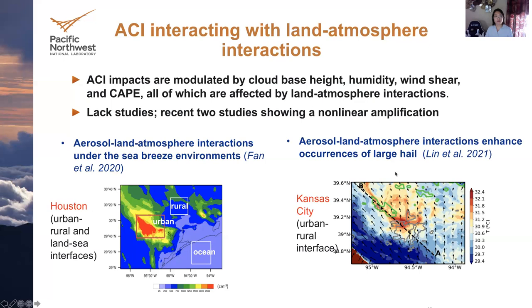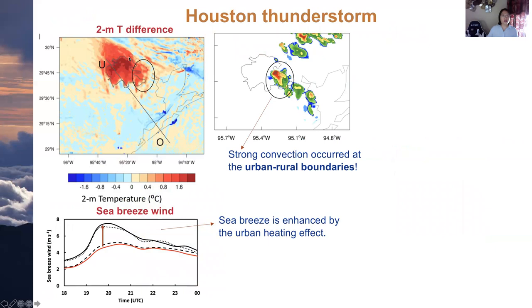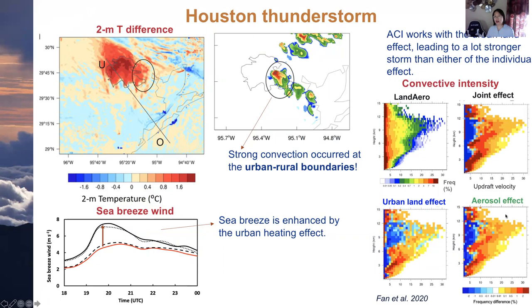Over Houston, you can see there is large heating due to the urban heat island effect, which caused the sea breeze to be significantly enhanced. However, the strongest convection occurred at the urban-rural boundaries, where we have the largest contrast in moisture, temperature, and aerosols — not at the location of greatest heating. This stronger convection results from the joint effect of aerosols and the urban land surface, causing a very significant enhancement in convection intensity and precipitation.